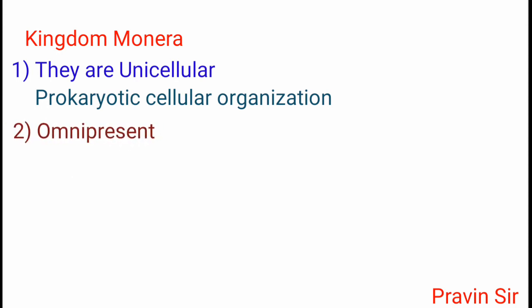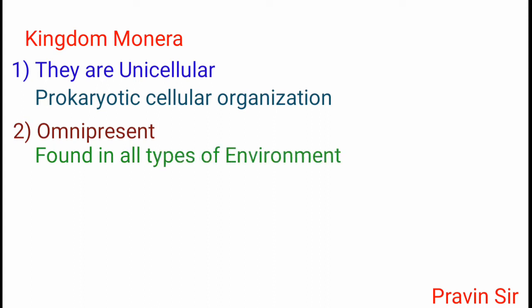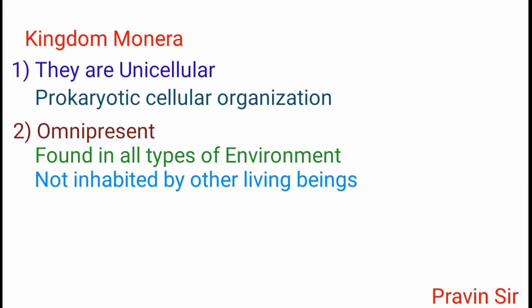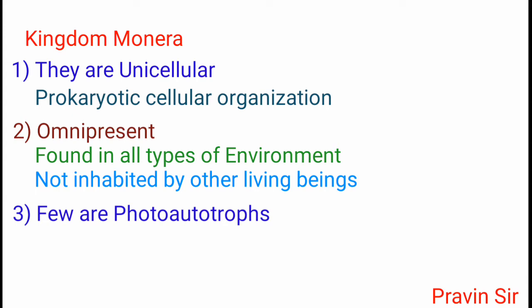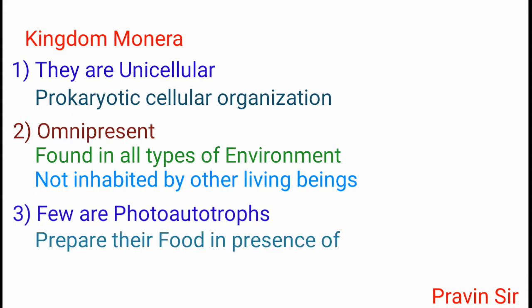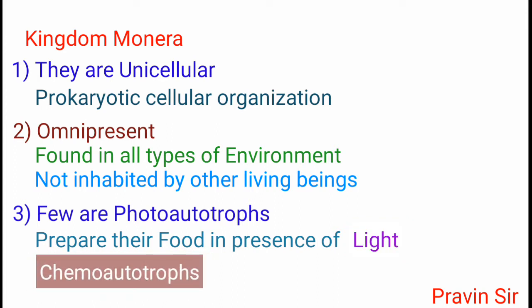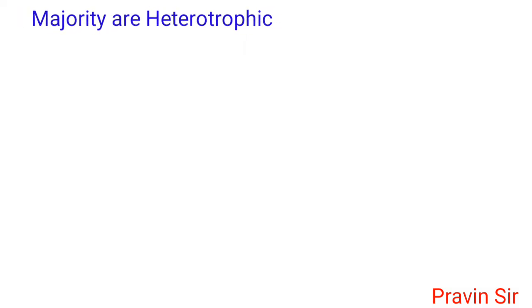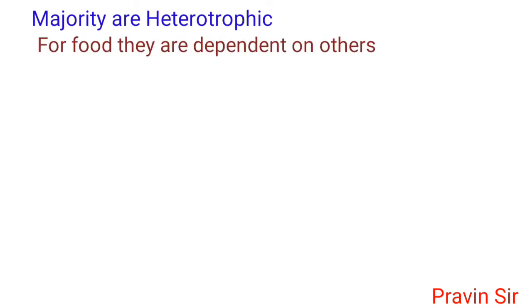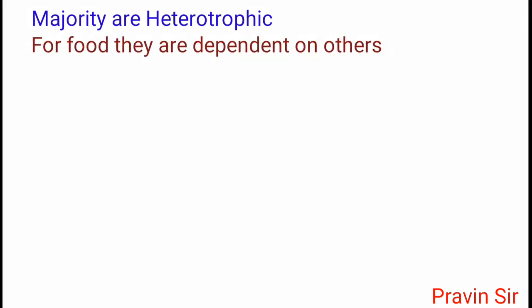These organisms are omnipresent — they are found in all types of environments which are not generally inhabited by other living beings. Few are photo-autotrophs, that is they prepare their food in the presence of light, and some are chemo-autotrophs that prepare their food with the help of chemicals. But the majority are heterotrophic in nature, dependent on others for food.